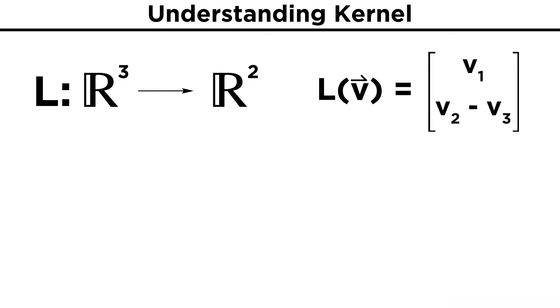Let's take our linear transformation from earlier for an example. We have the mapping from ℝ³ to ℝ² given by L of V equals V₁, V₂ minus V₃. To find the kernel,